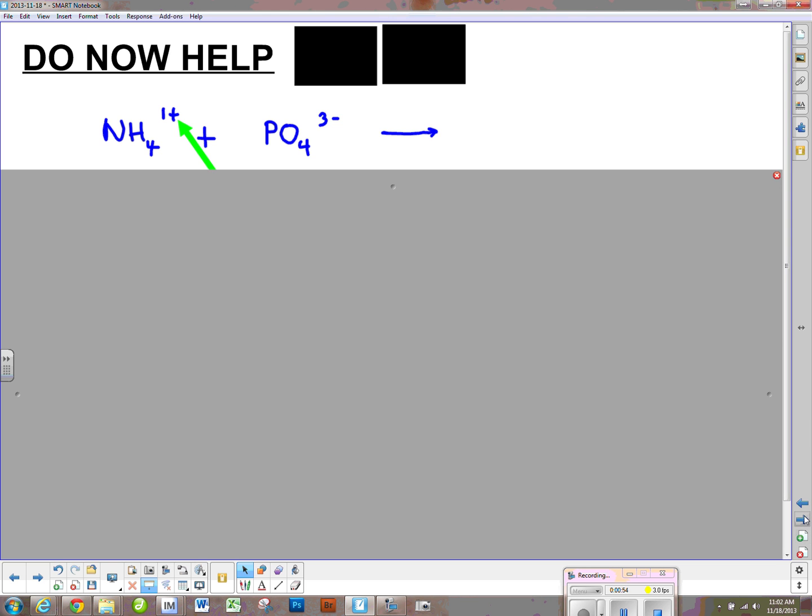I want you to see this ammonium when we put a parenthesis around him and we have a subscript here of 3, you need to understand that the parenthesis will make that 3 carry over to the hydrogen and the nitrogen. The other way you could write it, it would look like this. But guess what? That looks like 43, doesn't it?